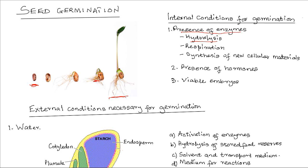The seed has food storage structures such as cotyledons and the endosperm. The food reserves are hydrolyzed into soluble forms that can be used by the growing regions. For example, starch is broken into sugars by the enzyme amylase, while lipids are broken down into fatty acids and glycerol by the enzyme lipase.